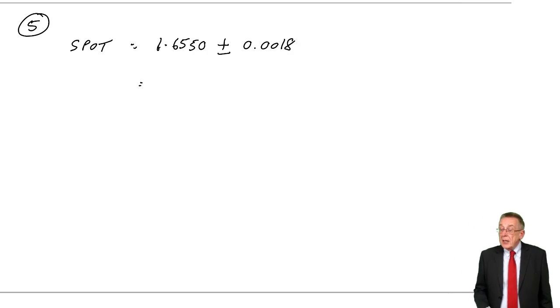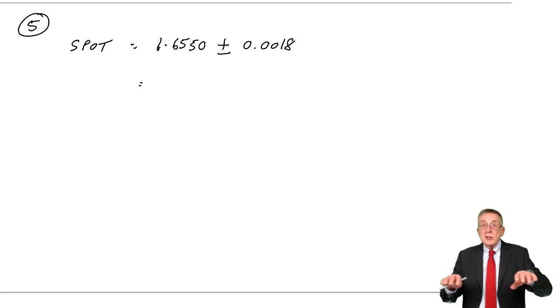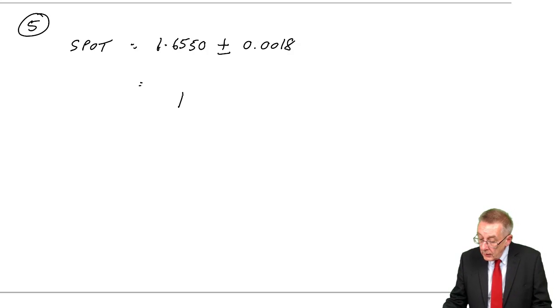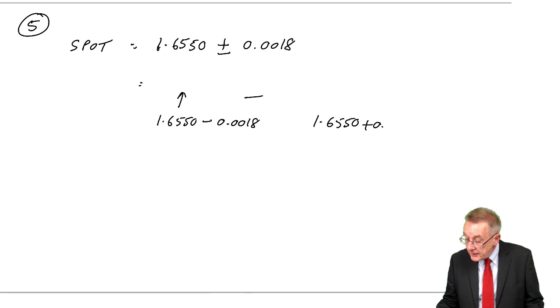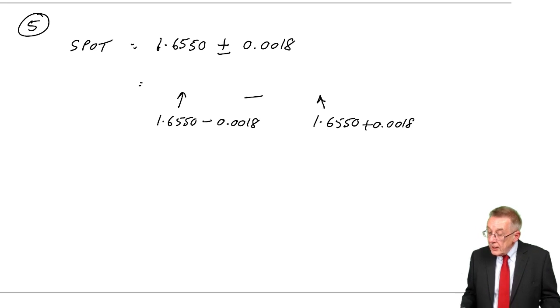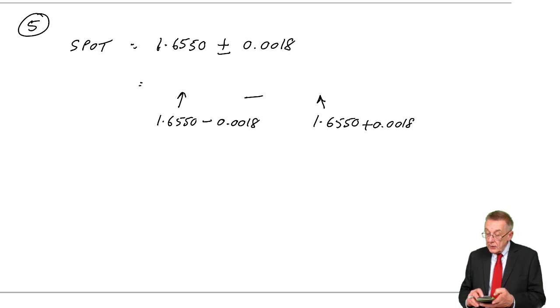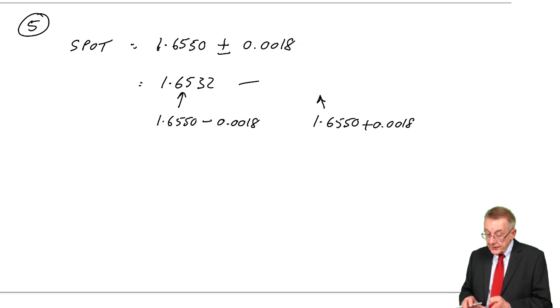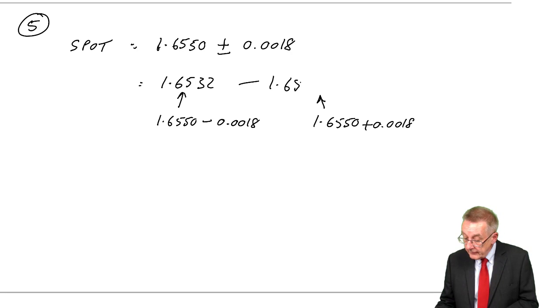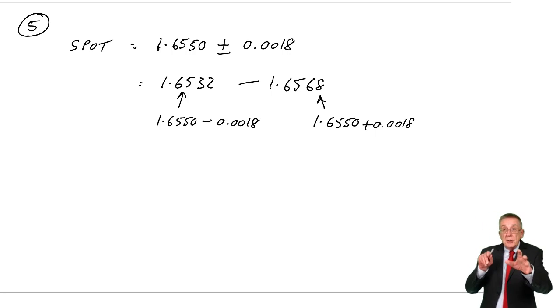Now the examiner has done this once or twice and all it means is, you know very well there are going to be two rates depending on which way you're converting. The lower rate is 1.6550 minus 0.0018. The higher rate is 1.6550 plus 0.0018. So the two rates, 1.6550 minus 0.0018 and 1.6550 plus 0.0018. So it's just one way he could give you the two rates.